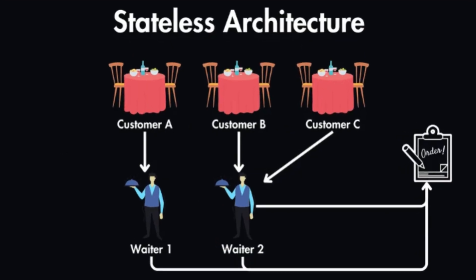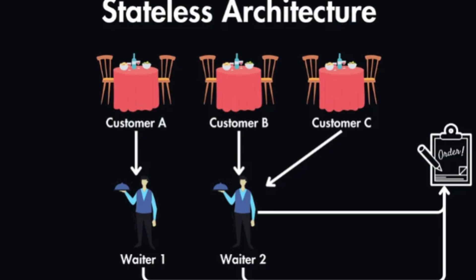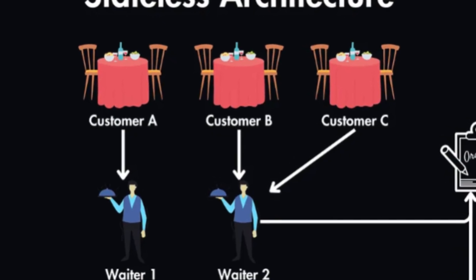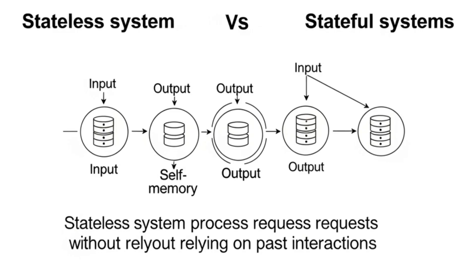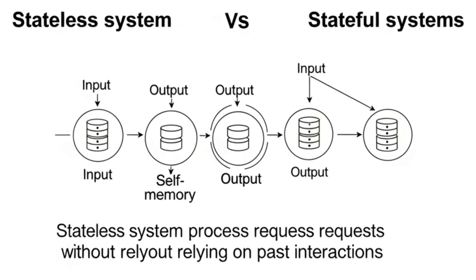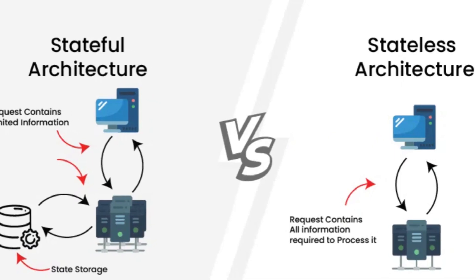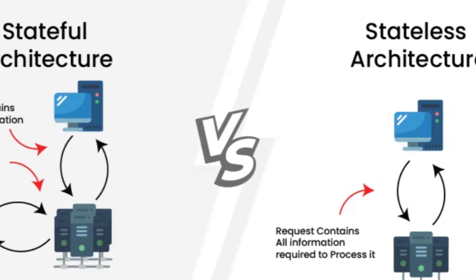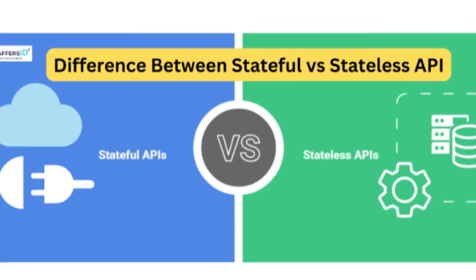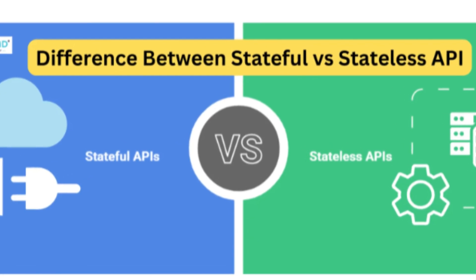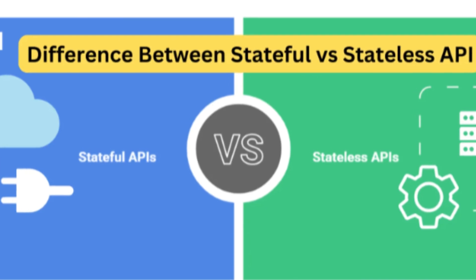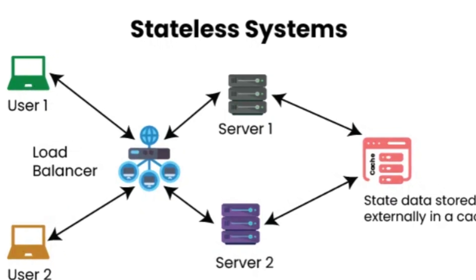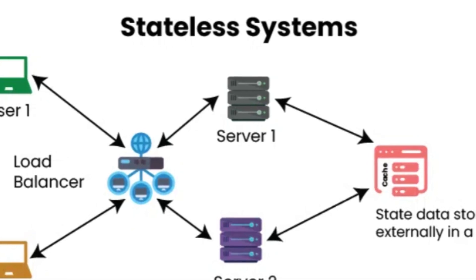Key characteristics of stateless systems: No memory — the server doesn't retain information from one request to the next. Self-contained requests — each request must contain all the necessary information for the server to process it. Scalability — easier to scale horizontally because any server can handle any request, and requests can be distributed across multiple servers without needing to share state.